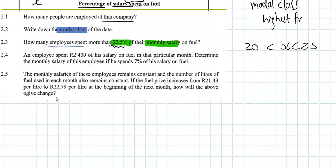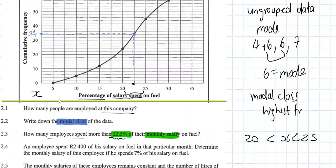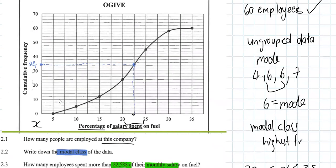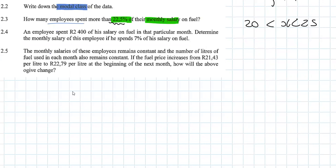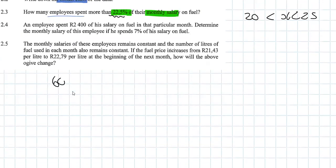But that's our cumulative frequency. How many employees spent more than that amount? It's going to be the total frequency minus the cumulative frequency, so 60 minus 34, which gives you 26 people.